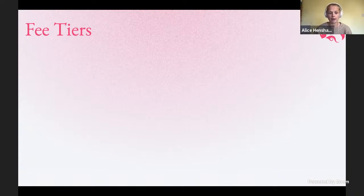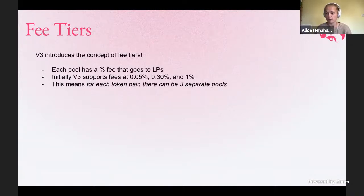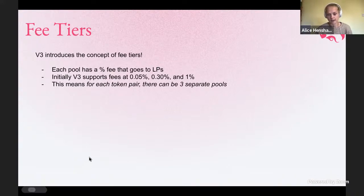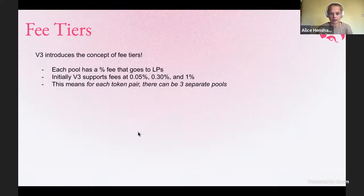Additionally, Uniswap V3 has these things called fee tiers — essentially we have three different pools for each token pair. Where in Uniswap V2 and other decentralized exchanges there is one pool per token pair with a certain fee, Uniswap V3 provides three different fee tiers: 0.05%, 0.3%, and 1%. This allows liquidity providers giving liquidity for more volatile and risky assets to choose a higher percentage fee to support their risk, while for super stable assets like USDC/DAI, you can take a smaller fee because you're not taking on much risk.